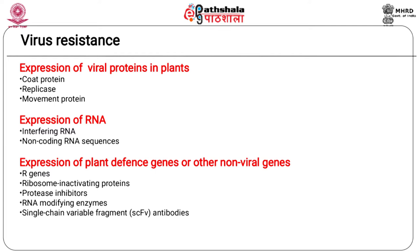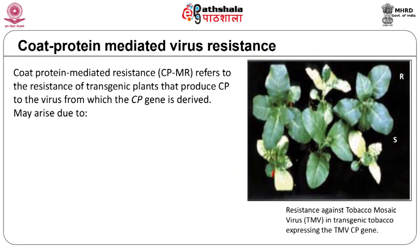The viral coat protein has multiple functions in the course of virus replication and infection to the host plants. These include encapsulation, viral RNA translation, systemic movement, vector transmission, and disease symptom severity. In successful examples, transgenic plants expressing the CP gene of a virus provided resistance against the corresponding virus and related strains. For example, potato mosaic virus CP gene expressed in transgenic potato, TMV CP gene expressed in tobacco, and papaya ring spot virus CP genes expressed in transgenic papaya. CP gene mediated resistance has been widely used.